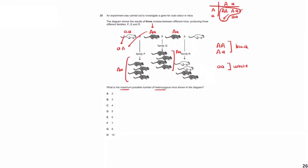Moving to the last family, we have aa here as well. Again, these black mice over here have to be Aa because they're going to get a big A from the black mouse and they're definitely going to get a small a from the white mouse, so they are Aa. Counting up the number of heterozygous: 4, 8, 10, 11, 12 — so 12 is our answer.